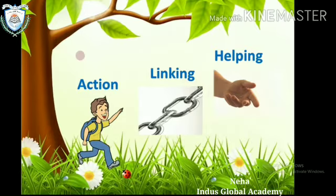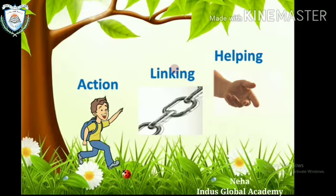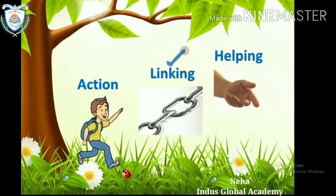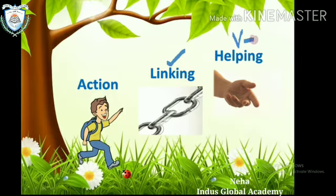Verbs have been further divided into three categories: action verb — isko main verb bhi kaha jaata hai, jisse hamare physical actions ka pata lagta hai. Second hai linking verb, aur third hai helping verb. Linking verb — do cheezon ko link karne ke liye jo use ki jaayegi. Helping verb — jo verb ki help karne ke liye use ki jaayegi.